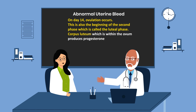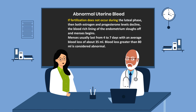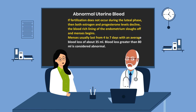During the luteal phase, the corpus luteum, which is within the ovum, produces progesterone. If fertilization does not occur during the luteal phase, then both estrogen and progesterone levels decline. The blood-rich lining of the endometrium sloughs off and menses begins. Menses usually lasts from four to seven days with an average blood loss of about 35 ml. Blood loss greater than 80 ml is considered abnormal.